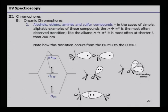For organic chromophores such as alcohols, ethers, amines, and sulfur compounds — in simple aliphatic examples — the n to sigma* is the most often observed transition. Like the alkane, the sigma to sigma* is most often at wavelengths shorter than 200 nm. The limitation of the UV machine is that it can detect only from 200 to 700 nm, so anything below 200 nm cannot be analyzed.